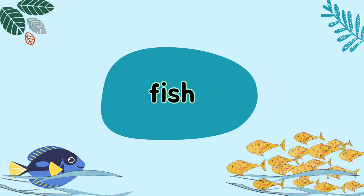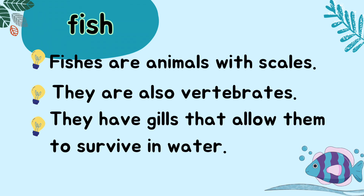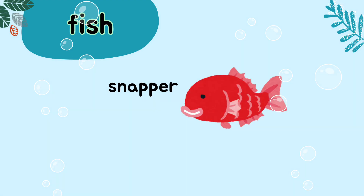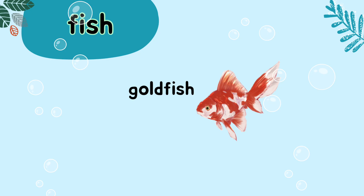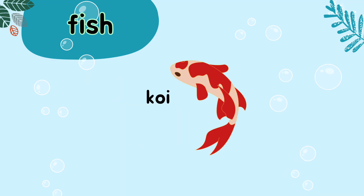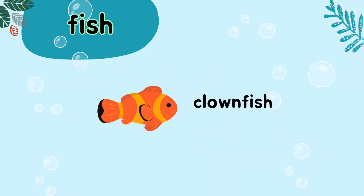Next, let's learn about fish. Fishes are animals with scales. They are also vertebrates. They have gills that allow them to survive in water. Some examples of fish are: lionfish, snapper, goldfish, guppy, koi, and clownfish.